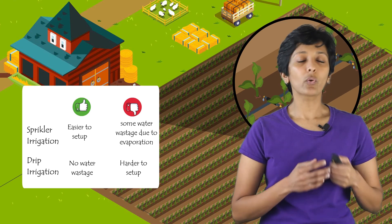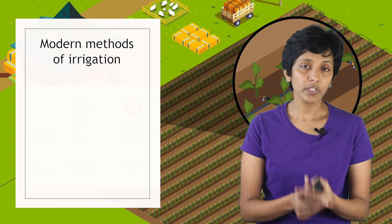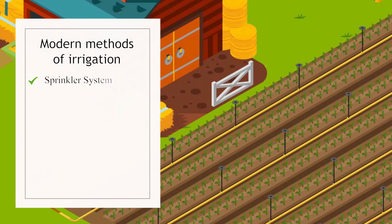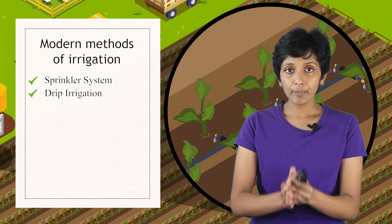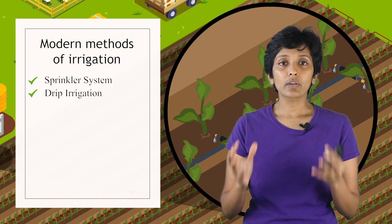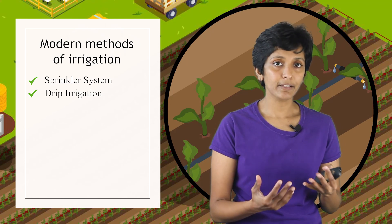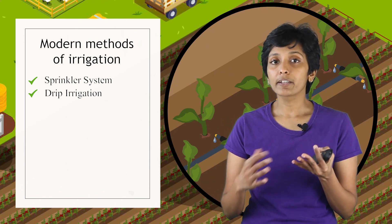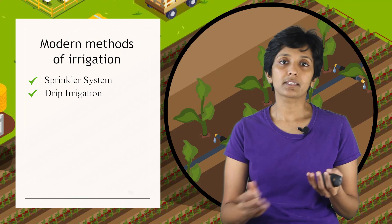Let's do a quick summary. We looked at two modern methods for water distribution that avoid water wastage during transportation — the sprinkler system and drip irrigation. Up next, we will look at what are all the possible dangers that the plants can face now that they are really growing large, and we'll also look at different methods farmers use to protect the plants against these dangers.